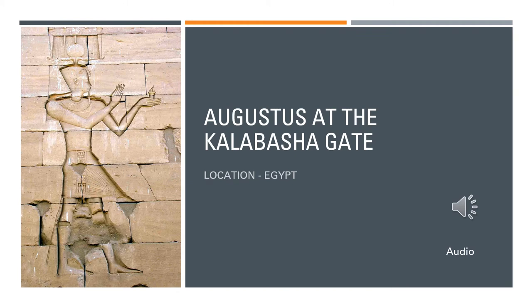Here's our first image of Augustus, and it certainly does not look like the Prima Porta statue that was made for Livia's villa in Italy. This is Augustus at the Kalabsha Gate. Its location is in Egypt, and unsurprisingly you can see that this is Augustus being described as though he is a pharaoh. Post-Actium, of course, he has control of Egypt.